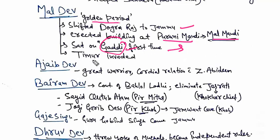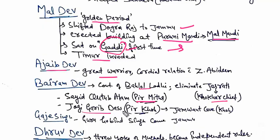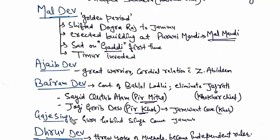The invasion of Timur also occurred during Maldev's time. The sons of Maldev include Ajayb Dev, who was a great warrior and had good relations with Zainul Abidin. Next is Biram Dev, who was a contemporary of Bahlol Lodi, with whom he conspired to eliminate Jasrat Huwaza Khokhar. During these times, Syed Qutub Alam came to Jammu, who is also called Peer Mitha. Also, Jogi Gharib Das came, who was also called Peer Khokhar. And Guru Gobind Singh came to Jammu during the period of Gaj Singh.